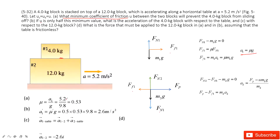We treat acceleration as a vector. The acceleration of number one relative to the table equals the acceleration of number one relative to number two plus the acceleration of number two relative to the table. Number one relative to the table is 2.6 m/s² in the horizontal direction. Number two relative to the table is 5.2 m/s². Therefore, the acceleration of number one relative to number two is negative 2.6 m/s² — that is, in the backward direction.